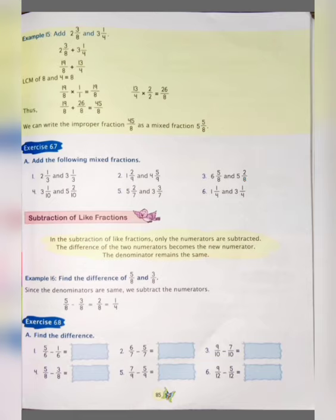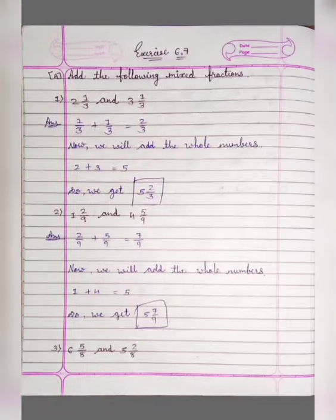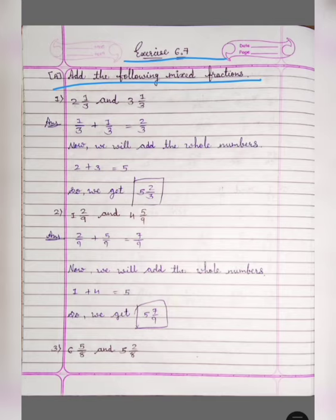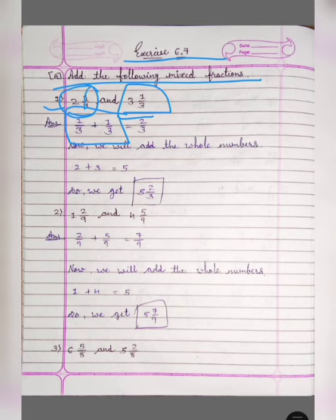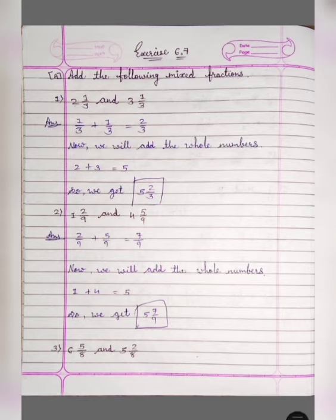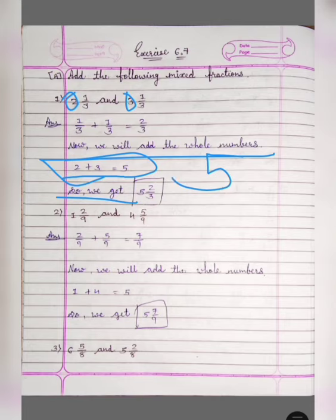Let's see exercise 6.7, question A: add the following mixed fractions. Let's see in the notebook. Number 1: 2 and 1 upon 3, and 3 and 1 upon 3. First we will add the fractions: 1 upon 3 plus 1 upon 3 is equal to 2 upon 3. Now we will add the whole numbers: 2 and 3, so 2 plus 3 is equal to 5. So now we have the answer 5 and 2 upon 3.